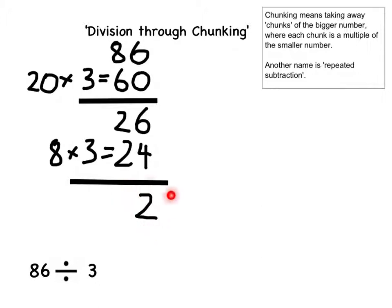I've now got to a number that is smaller than the number that I was originally dividing by. This means I can't do any more chunking, so I must look at the chunking that I have done to get my answer.